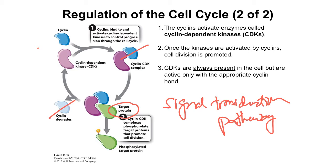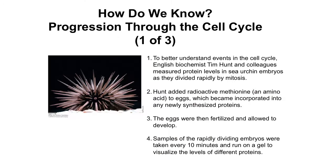It is important to note that in contrast to cyclins, the CDKs are always present in the cell — they are very stable in terms of their presence. But they are only active when the appropriate cyclin binds to them. So without the cyclins, despite the fact that CDKs are always present, they would be inactive.